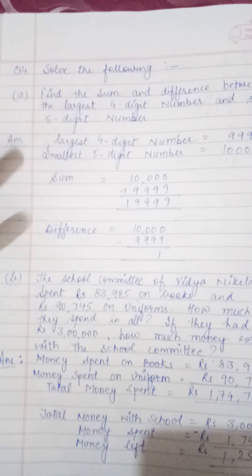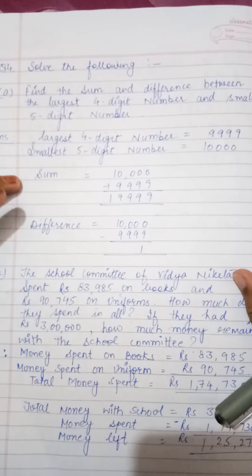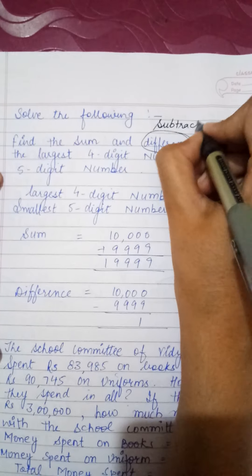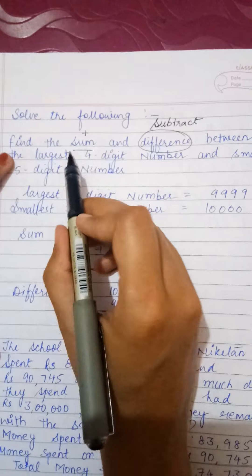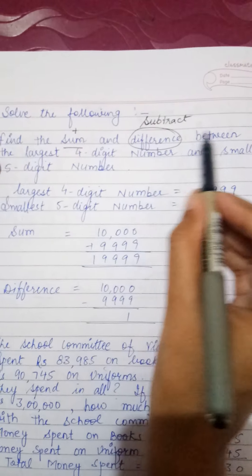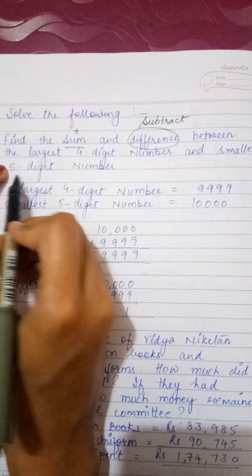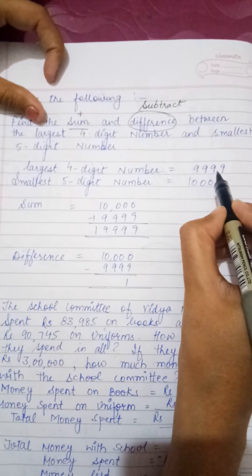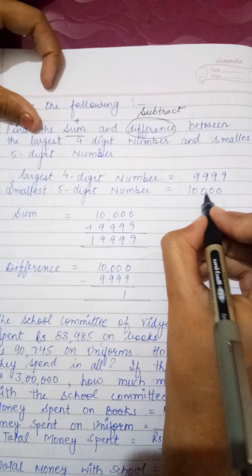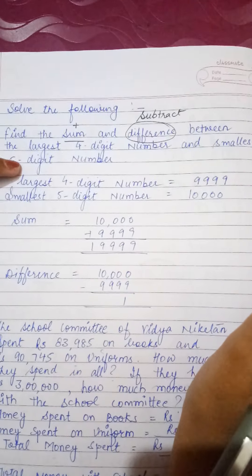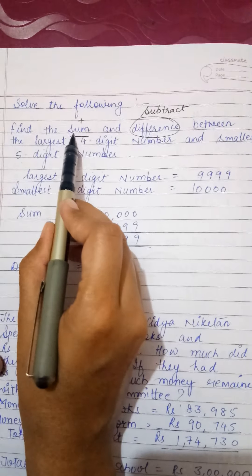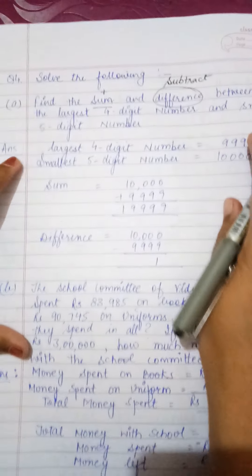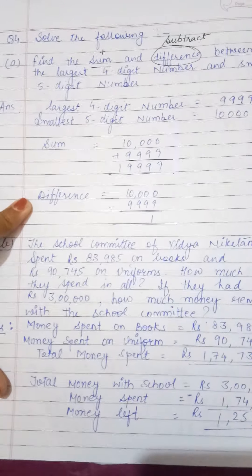Now let's move to question number 4. These are statement sums but they are very easy. Find the sum and the difference between the largest 4-digit number and the smallest 5-digit number. The largest 4-digit number is 9999 and the smallest 5-digit number is 10000. Add them to find the sum: you get 19,999. Then subtract to find the difference: you get 1.